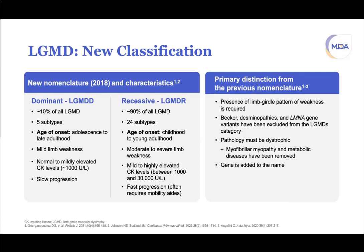The main distinctions in the new classification are: patients must have a limb girdle pattern of weakness with pelvic and shoulder girdles disproportionately involved — eliminating conditions restricted to distal muscles. Additionally, the muscle biopsy must look dystrophic under light and electron microscopy, which eliminated some myofibrillar myopathies with myofibrillar disarray and some metabolic diseases. A dystrophic muscle biopsy is required.